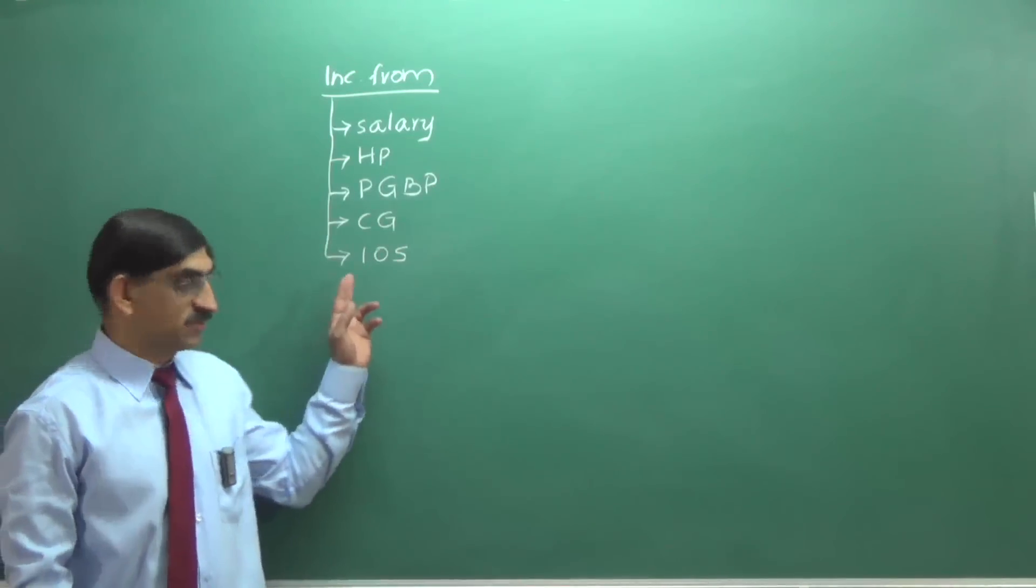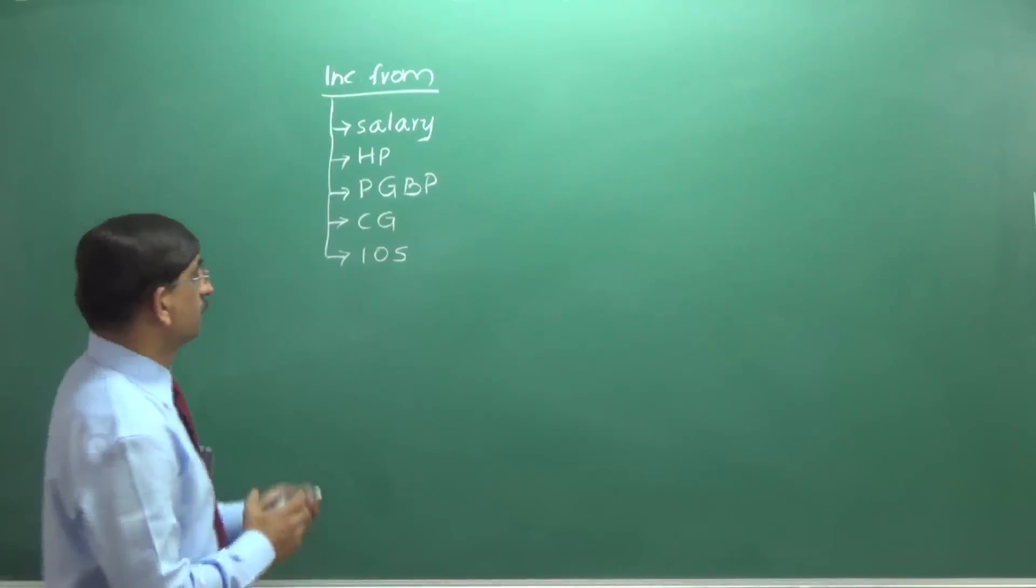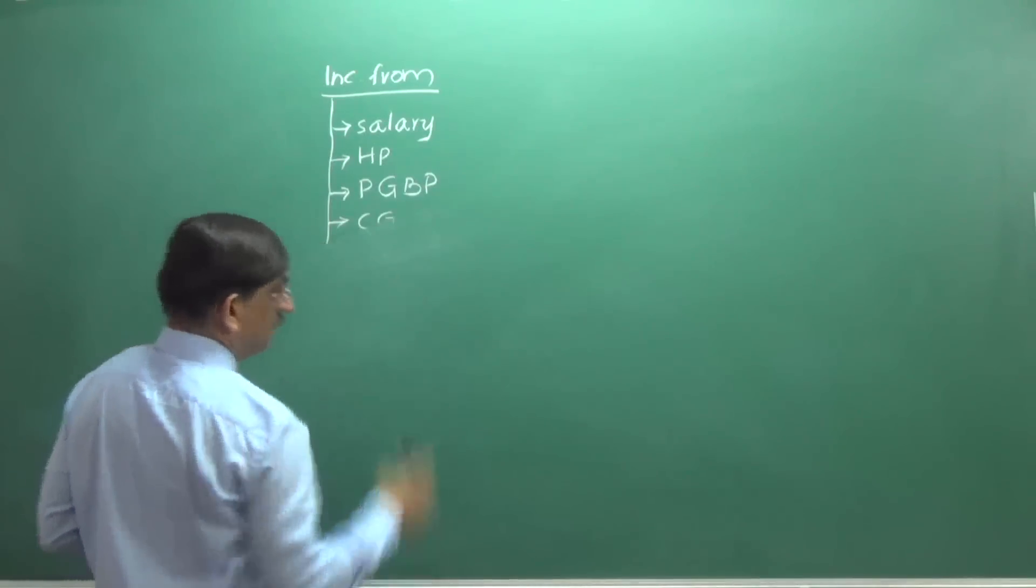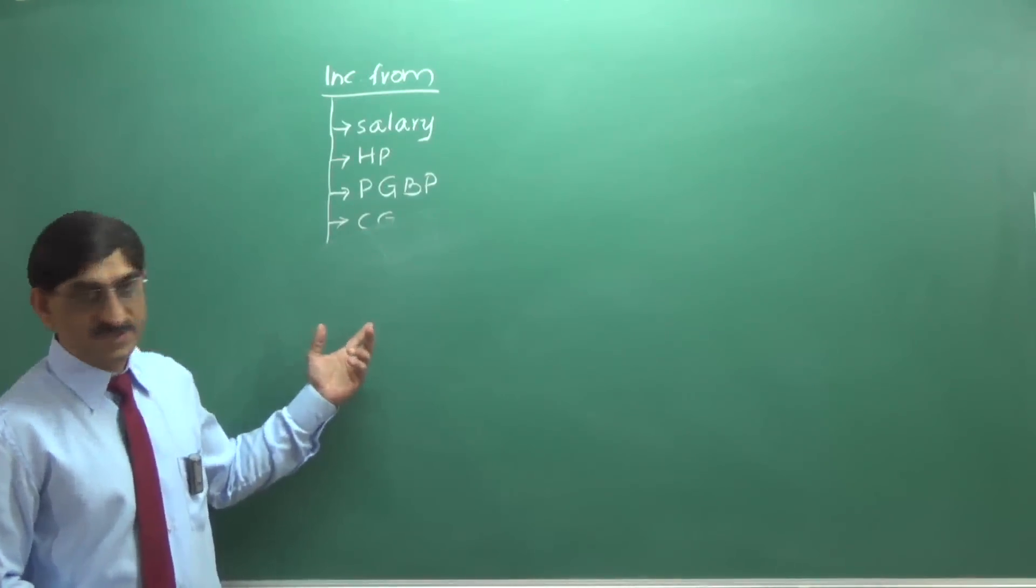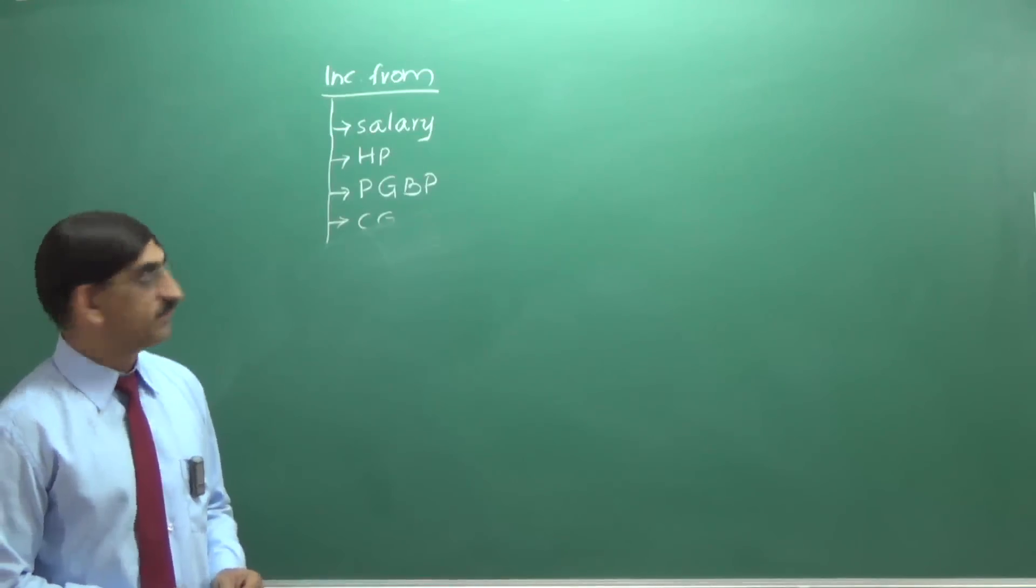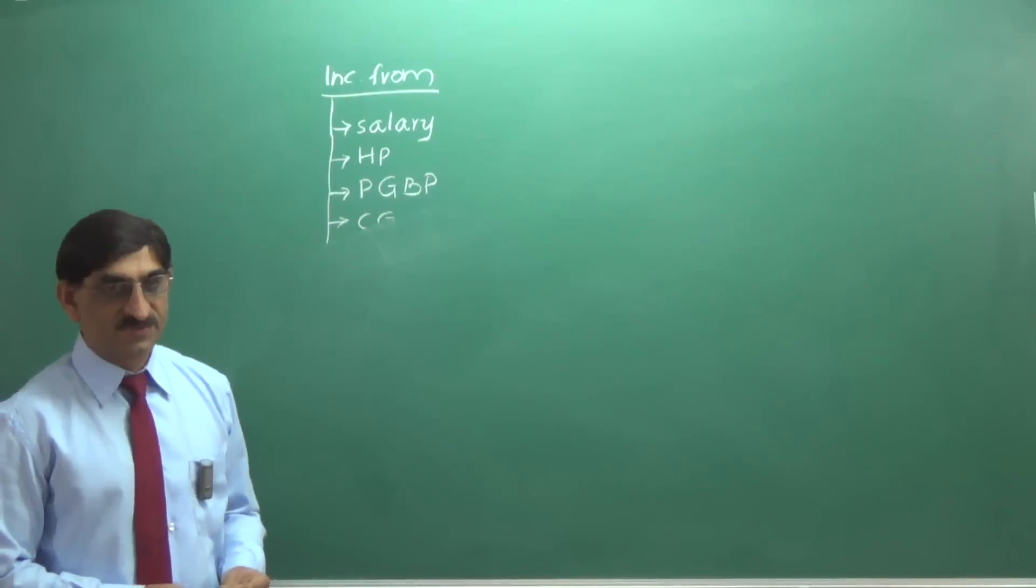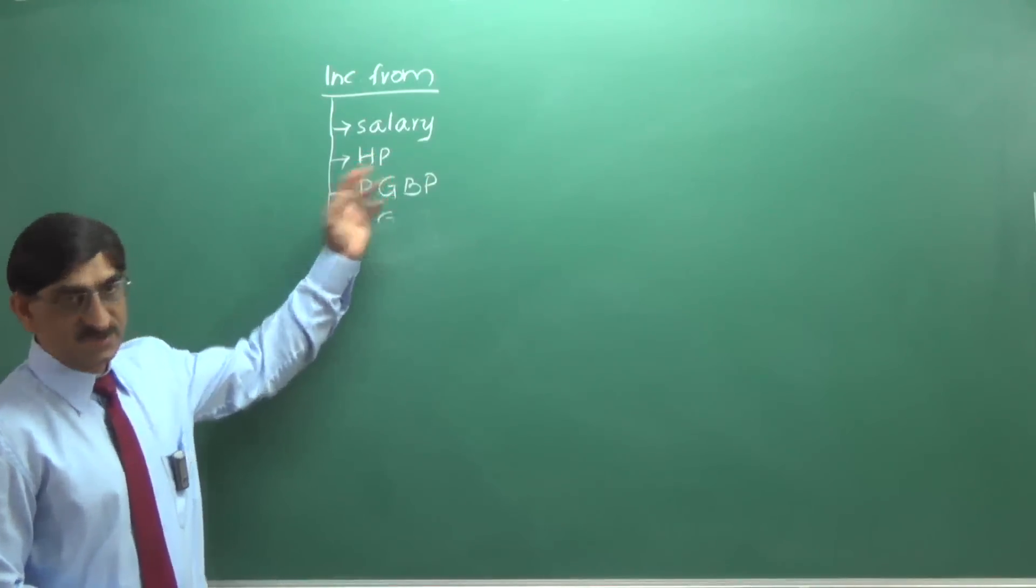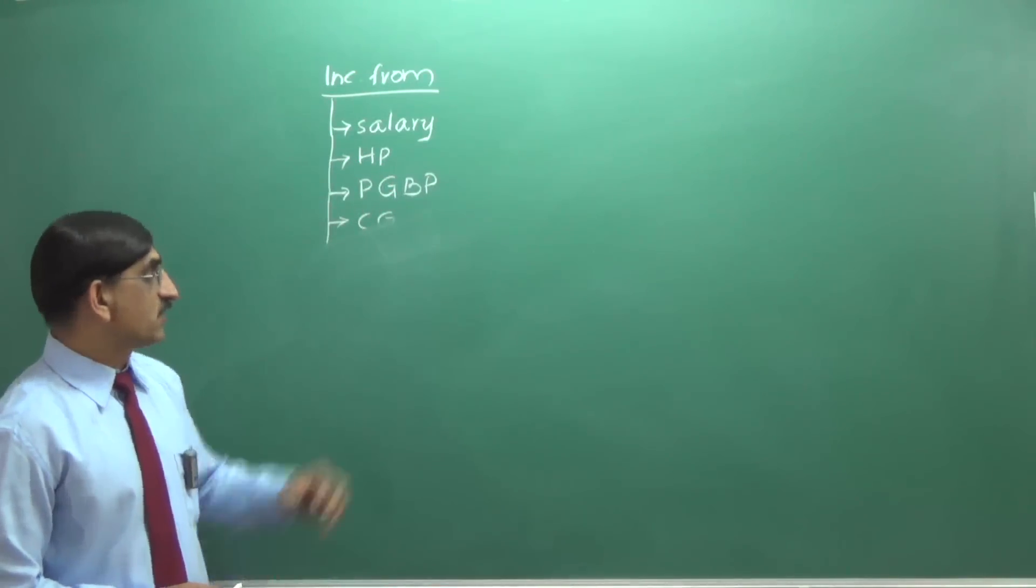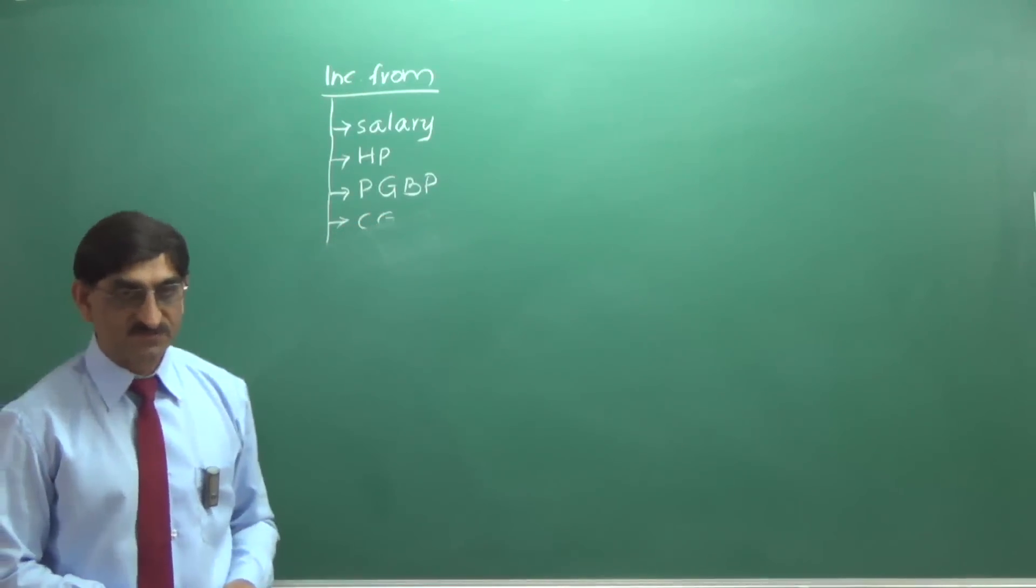Today, we are going to discuss about income from other sources. Income from other sources is a subsidiary head of income. Salary is going to specifically cover all the heads of income, all the source of salary and salary heads, similarly house property. And what cannot be covered in any of these four heads will be covered under income from other sources.